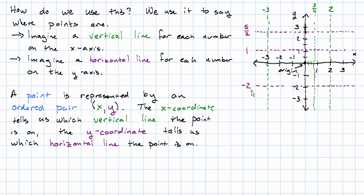For example, let's say we want to plot the point negative three, one. We would draw the vertical line through negative three on the x-axis. We would draw the horizontal line through one on the y-axis. And the place where they cross is the point negative three, one.